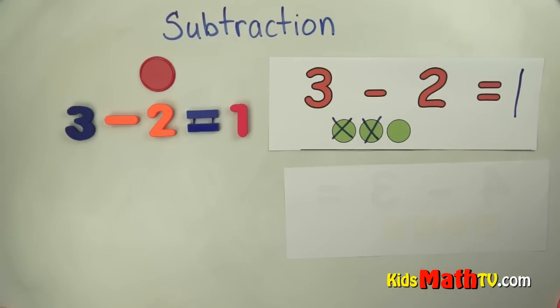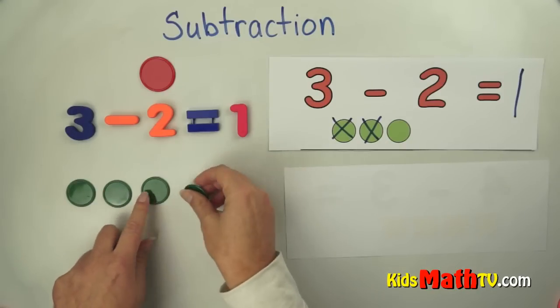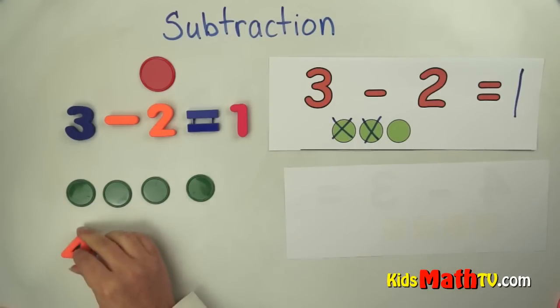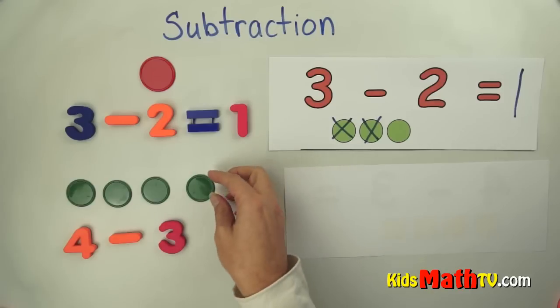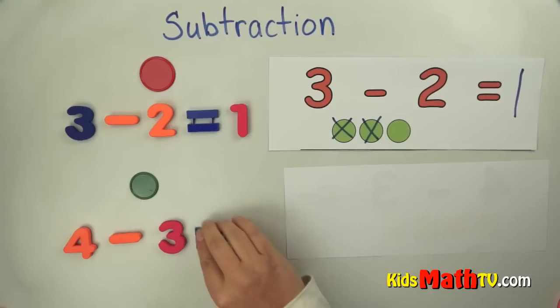Let's try another problem. Let's try four. Here's one, two, three, four. Four, take away, or subtract, three. Four minus three, four take away three. So I'm going to take away three: one, two, three. How many are left over? There is one left over. So it equals one.